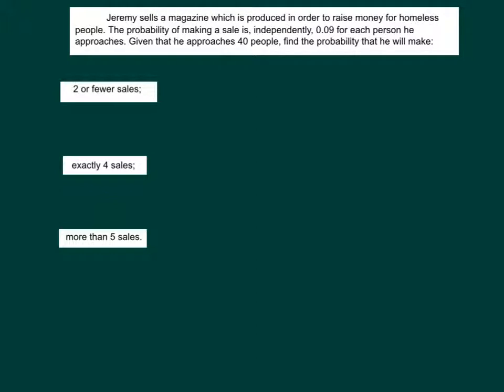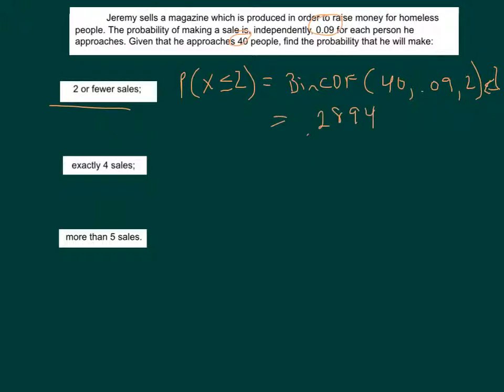And now for just one last scenario with a little bit more of a specific. This one's only in the video. So Jeremy sells a magazine. Chances of him selling the magazine is 9%. For each person he approaches, he's going to approach 40 people, find the probability that he will make two or fewer sales. So two or fewer, that means that two is included. So that's the probability of x less than or equal to two. This drives us to a binomial CDF in my calculator for n of 40, a p of 0.09, and an x of 2. And then just a return on the calculator and that yields us an answer of 0.2894.